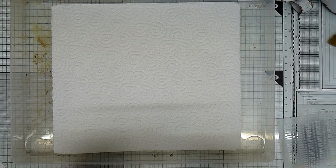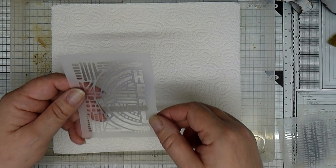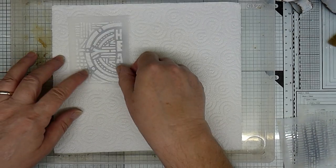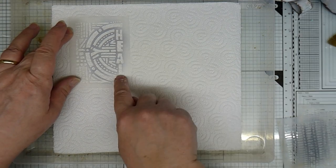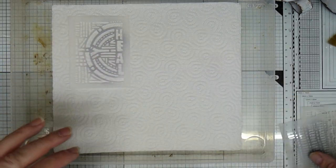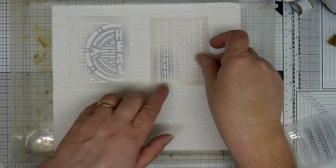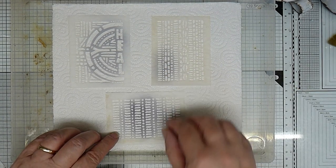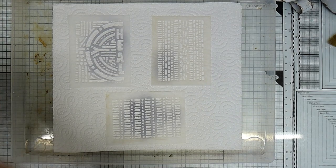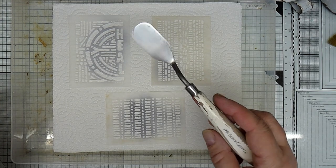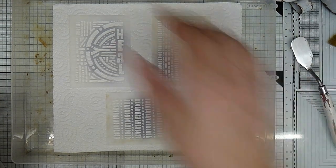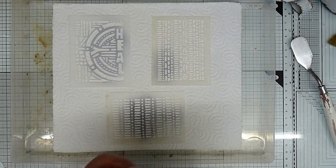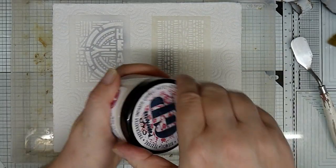So we'll start by making sure our stencils are the right way around. So that one says heal. So I'll have that here. Another one here. And then one there. Now I've got myself a spatula, palette knife, whatever you've got. And this is the Paperartsy grunge paste.